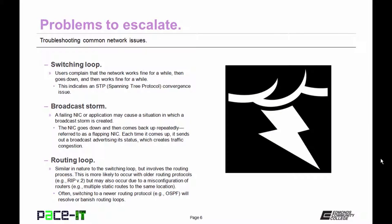Then there's the broadcast storm. A failing NIC or application may cause a situation in which a broadcast storm is created. The NIC goes down, then comes back up, then goes back down, and it does this repeatedly. This is often referred to as a flapping NIC. Each time it comes up, it sends out a broadcast advertising its status, which creates traffic congestion. An application can do the same thing. In either case, escalate this up your support chain as soon as it's discovered.